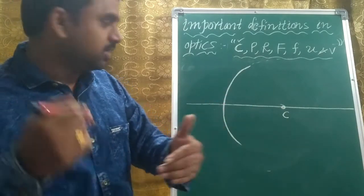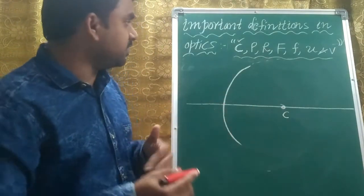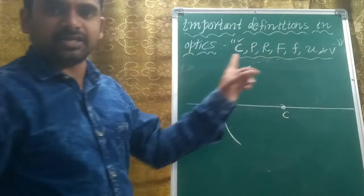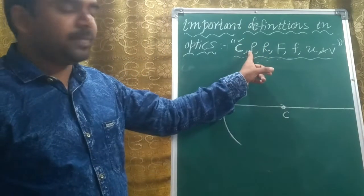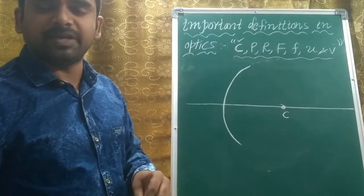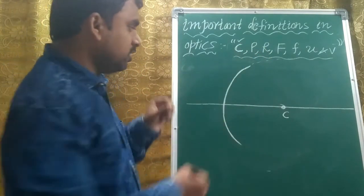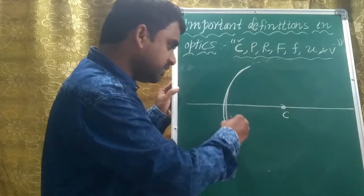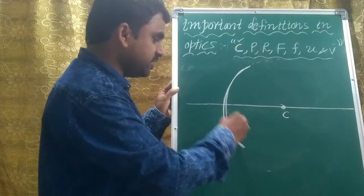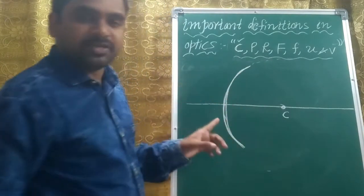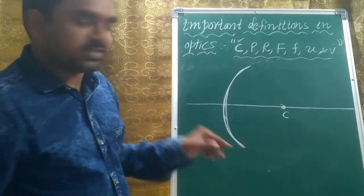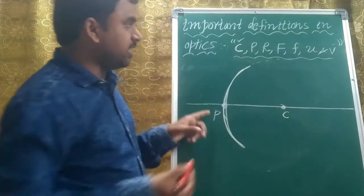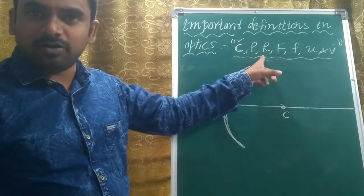Before discussing radius of curvature, I would like to explain P. P stands for pole. What is pole? It is the center point of the geometrical surface area of the curved mirror. The center of the geometrical surface area is called the pole.